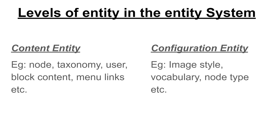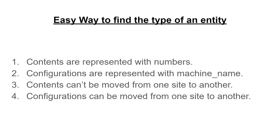We mainly have two levels of entities: content entities and configuration entities. Content entities include nodes, taxonomic terms, users, block contents, and menu links. Configuration entities include image styles, vocabularies, node types, and block types.